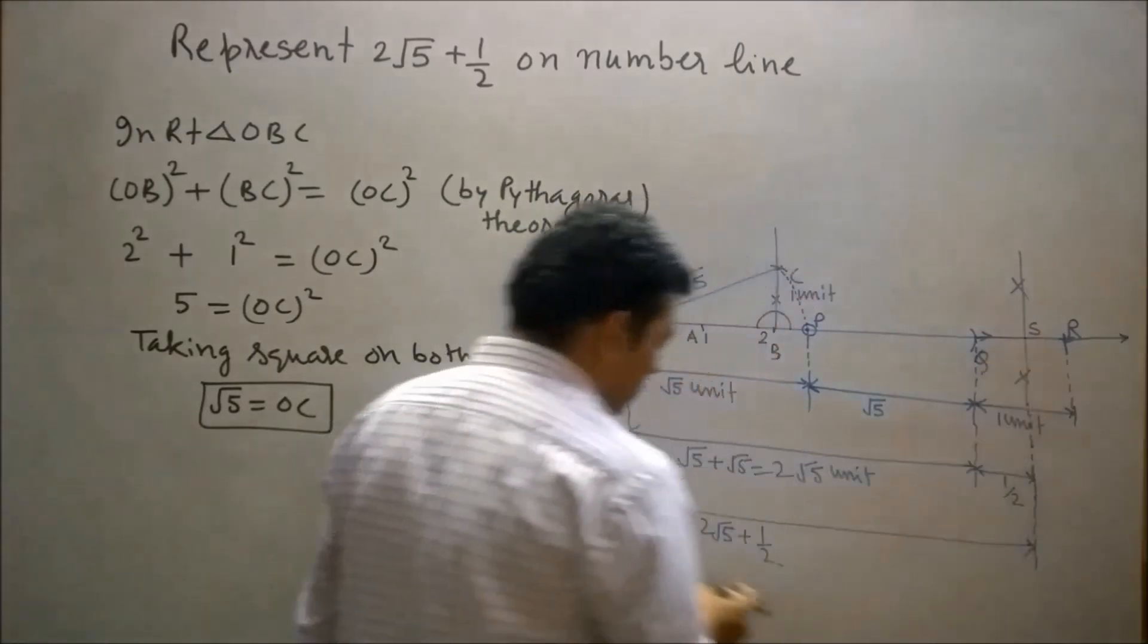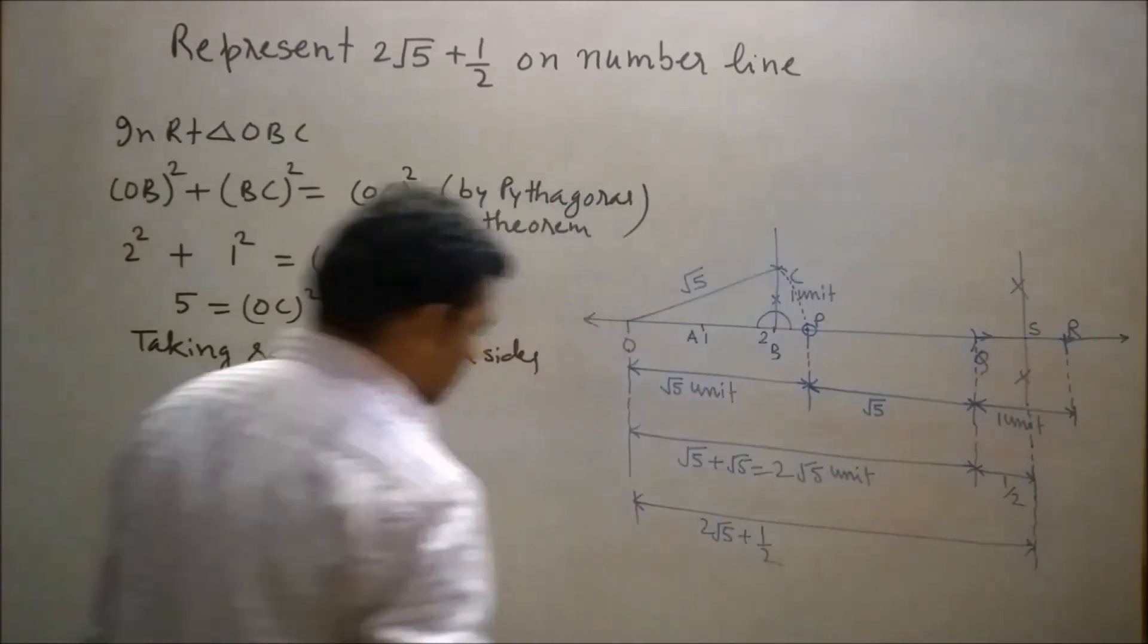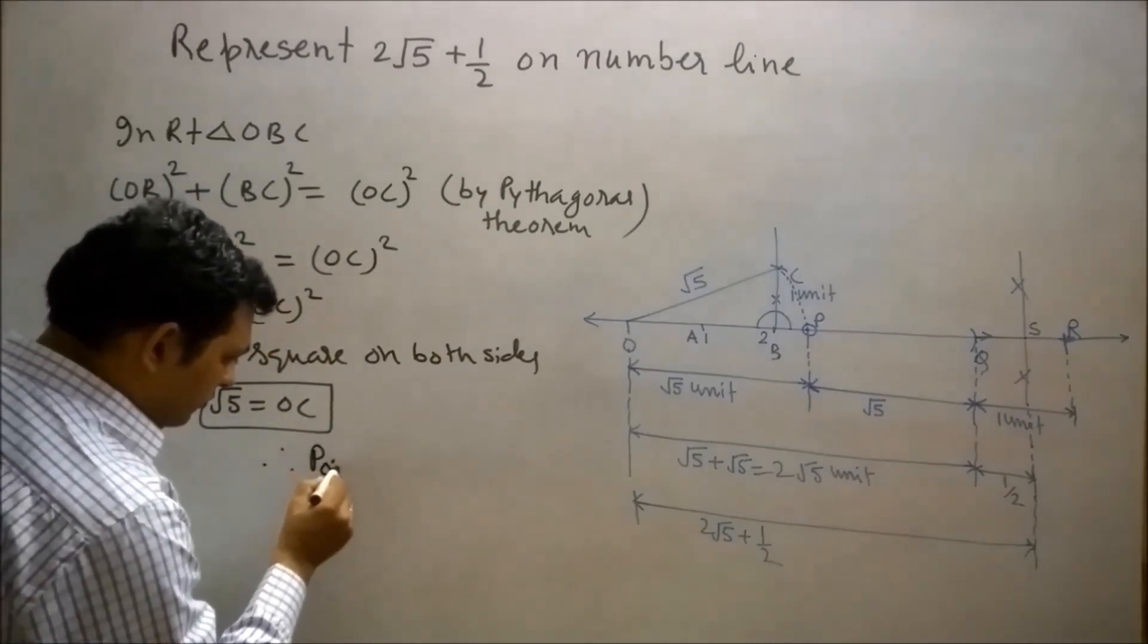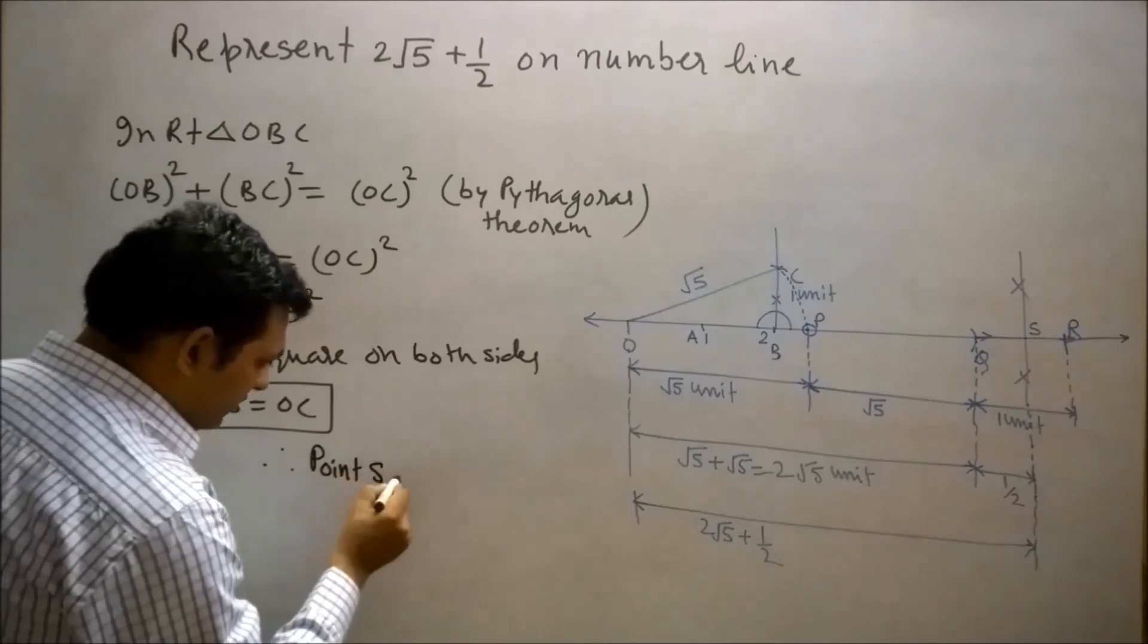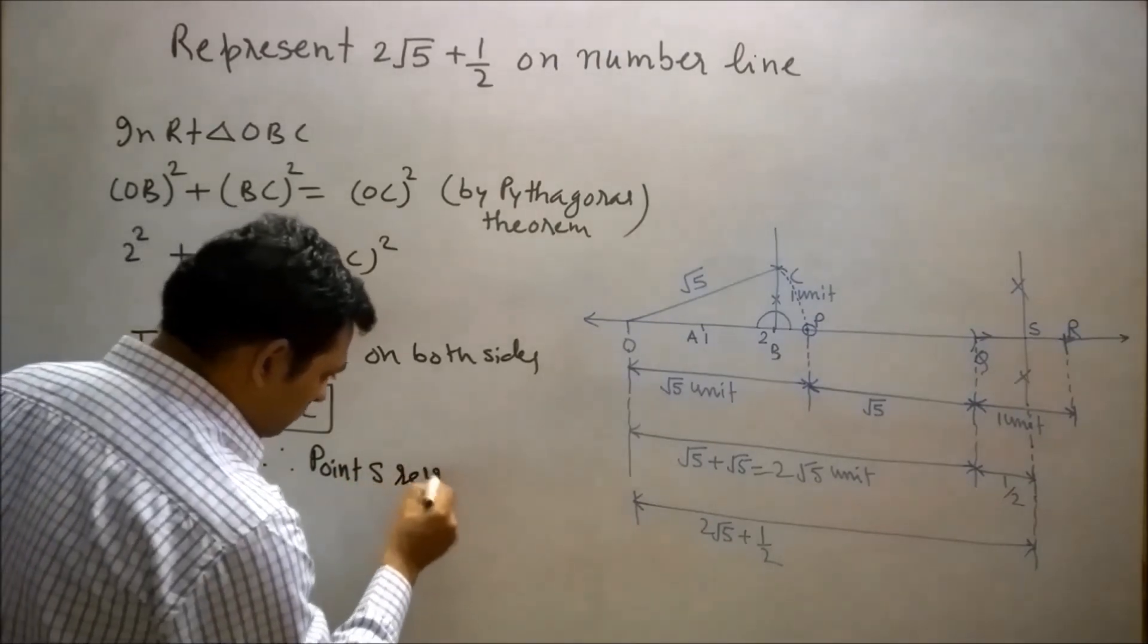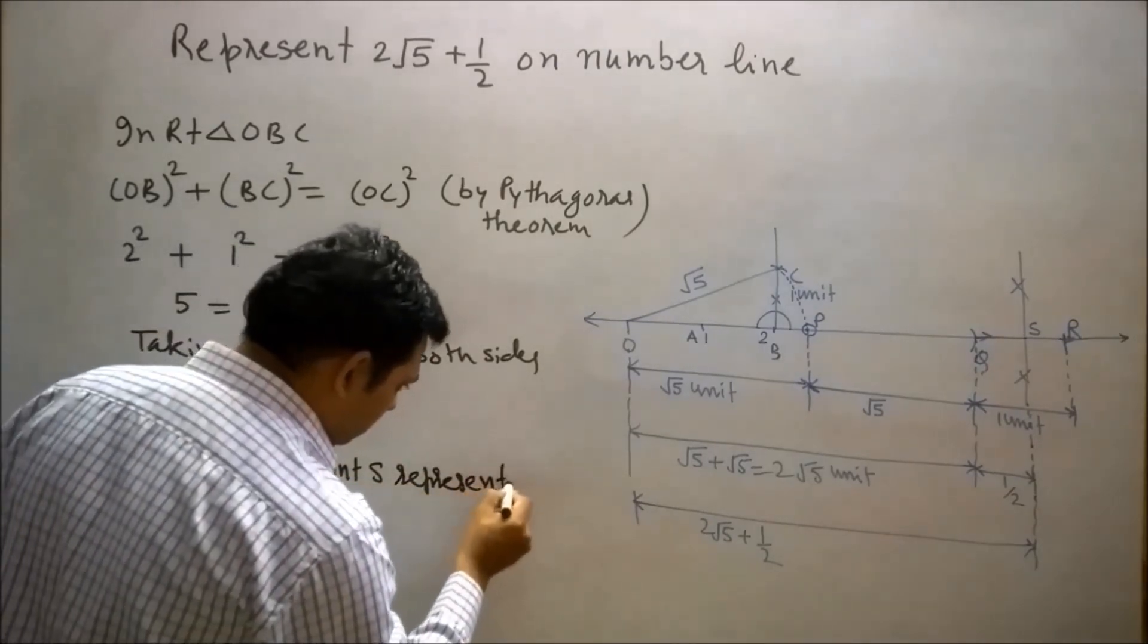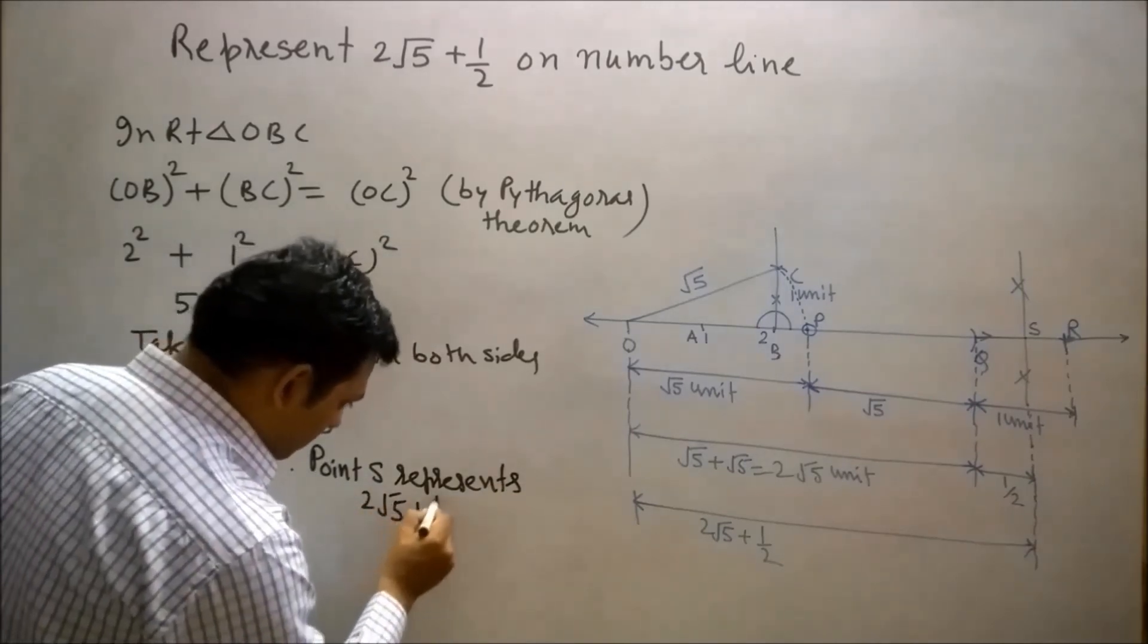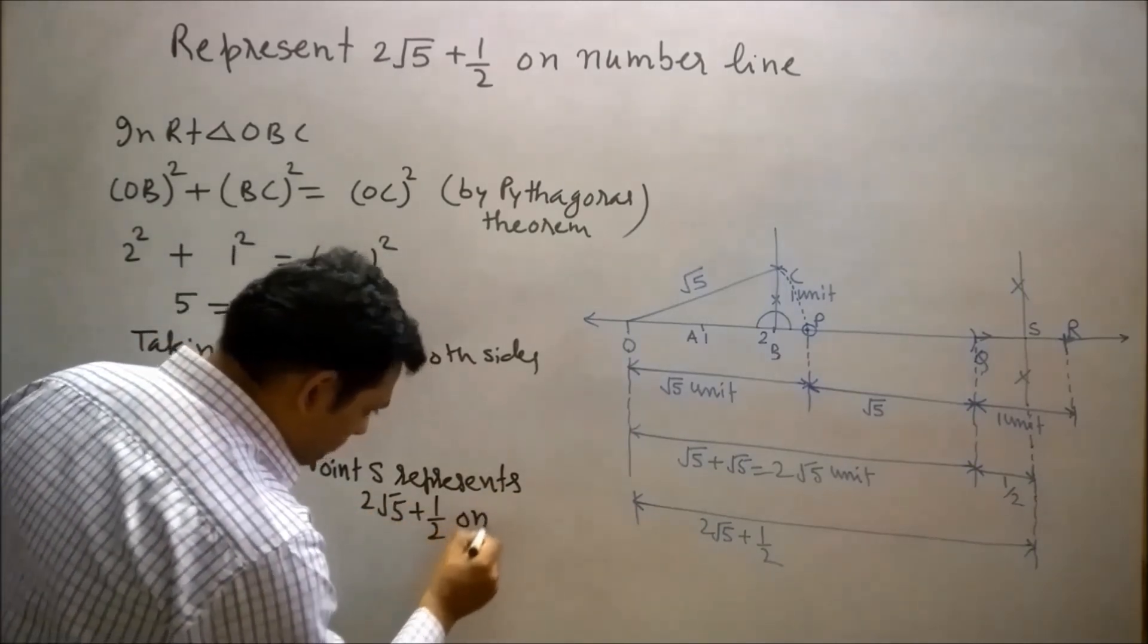Point S represents 2√5 + 1/2. Therefore, point S represents 2√5 + 1/2 on the number line.